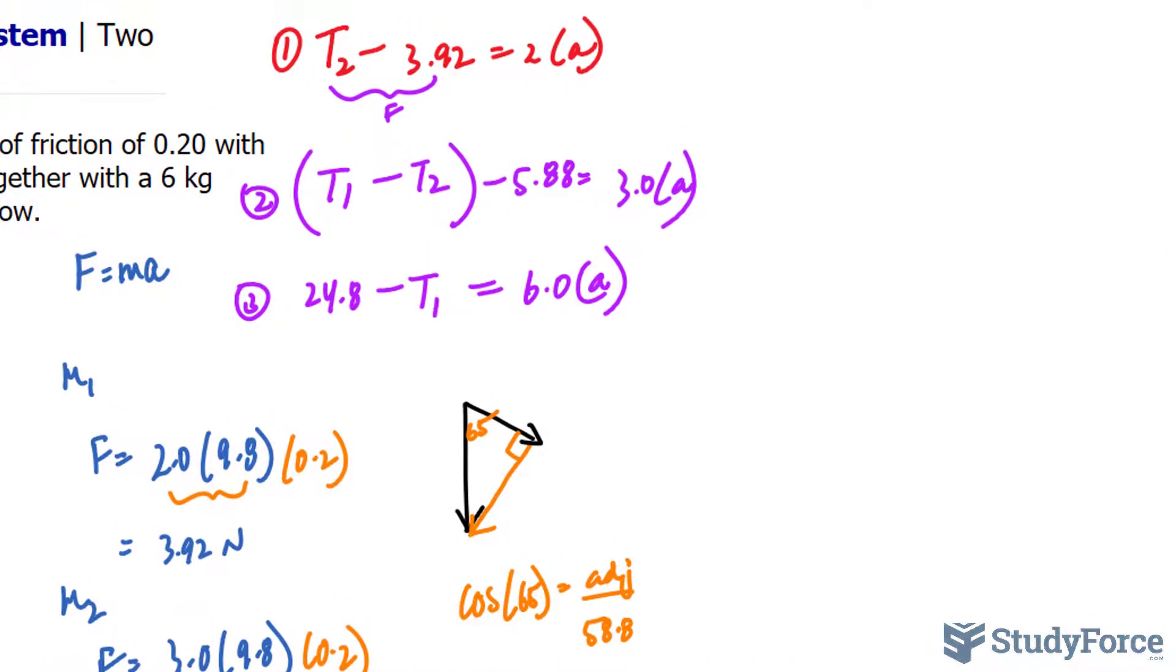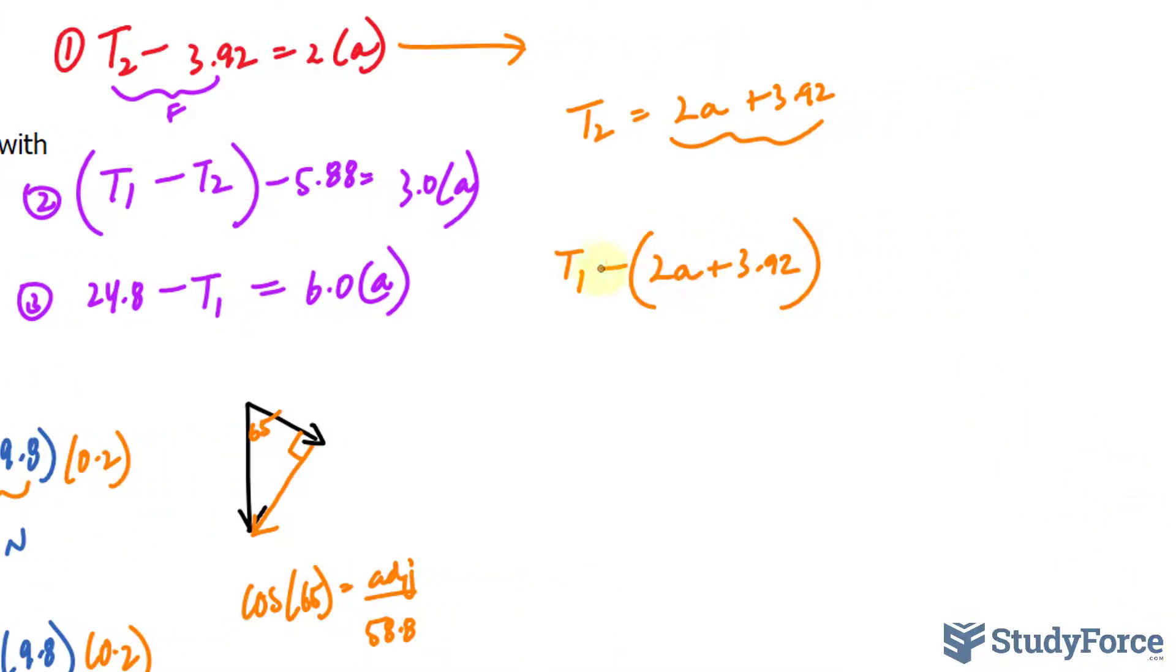So we have three unknowns and three equations. We can solve this using substitution. So I'll start with equation number one and I'll solve for T sub 2. So let's go ahead and do that. We have T sub 2 is equal to 2A plus 3.92. Let's substitute this value right into here. We have T sub 1 minus 2A plus 3.92. And since this expression has two terms, you should put this in parentheses so that the subtraction affects both of them.